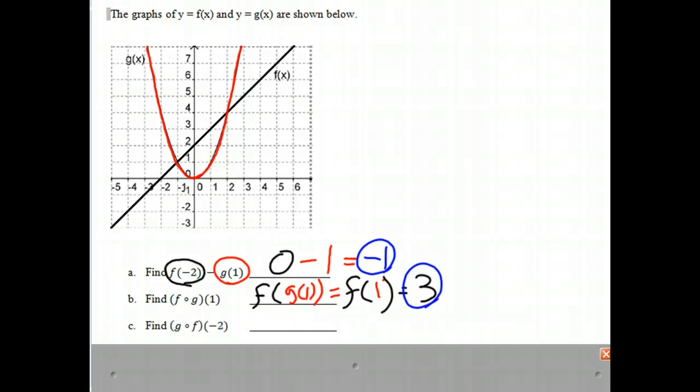In our next problem, we are going to find g circle f(-2). So going with what we've done before, that means g(f(-2)). And now we have to evaluate f(-2). Well, f(-2), if we go over on our graph, when x is -2, y is 0. We've done that one already. And so this becomes g(0).